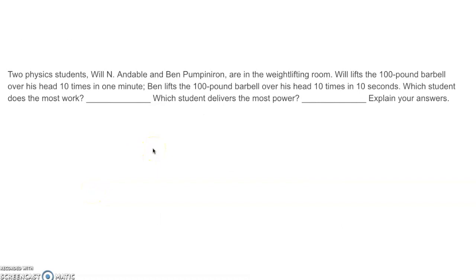Two students, Will Enable and Ben Pump-an-Iron, are in the weightlifting room. Will lifts the hundred pound barbell over his head ten times in one minute. Ben lifts the hundred pound barbell over his head ten times in ten seconds. Which student does the most work and which student delivers the most power? Explain. We'll do that one on the board. Do it now.